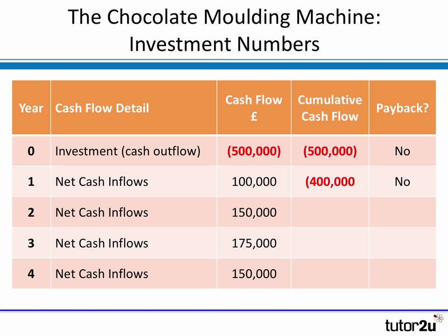In year two, we get slightly more in from this machine — £150,000 worth of net cash flows. Therefore, our running total is still negative: minus £250,000. We have still not yet reached payback.